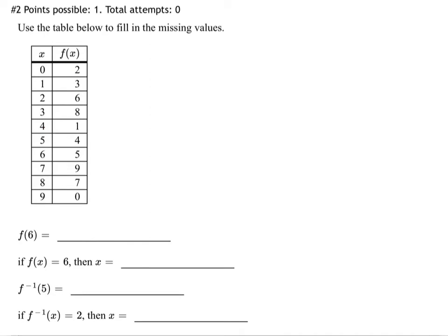Let's move on to number 2 and use this table. This table is basically telling us some inputs and outputs. You put in 0, you get out 2. You put in 1, you get out 3. You put in 2, you get out 6. You put in 3, you get out 8 — et cetera. Inputs and outputs for some function.